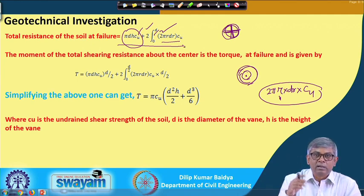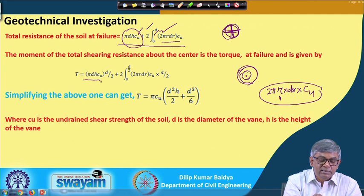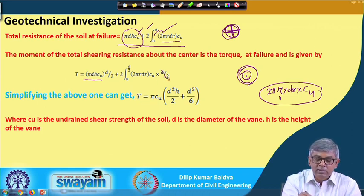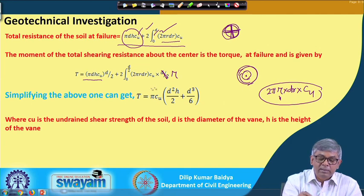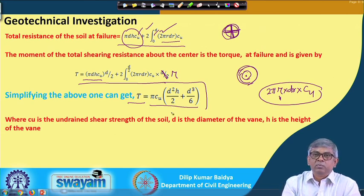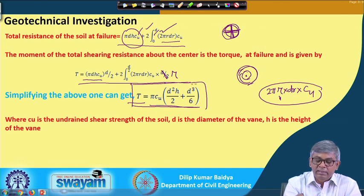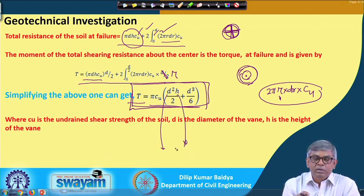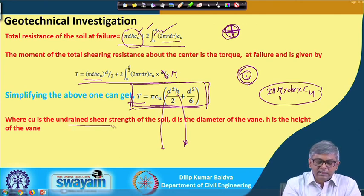To get torque, multiply each resistance by its moment arm r. The cylindrical surface resistance contributes πdhc_u × (d/2), and the top and bottom surfaces contribute from integrating 2πr·dr·c_u × r from 0 to d/2, multiplied by 2. Integrating and simplifying gives the final formula: T = πc_u(d²h/2 + d³/6). This relates applied torque T to undrained shear strength c_u and vane dimensions — diameter d and height h.